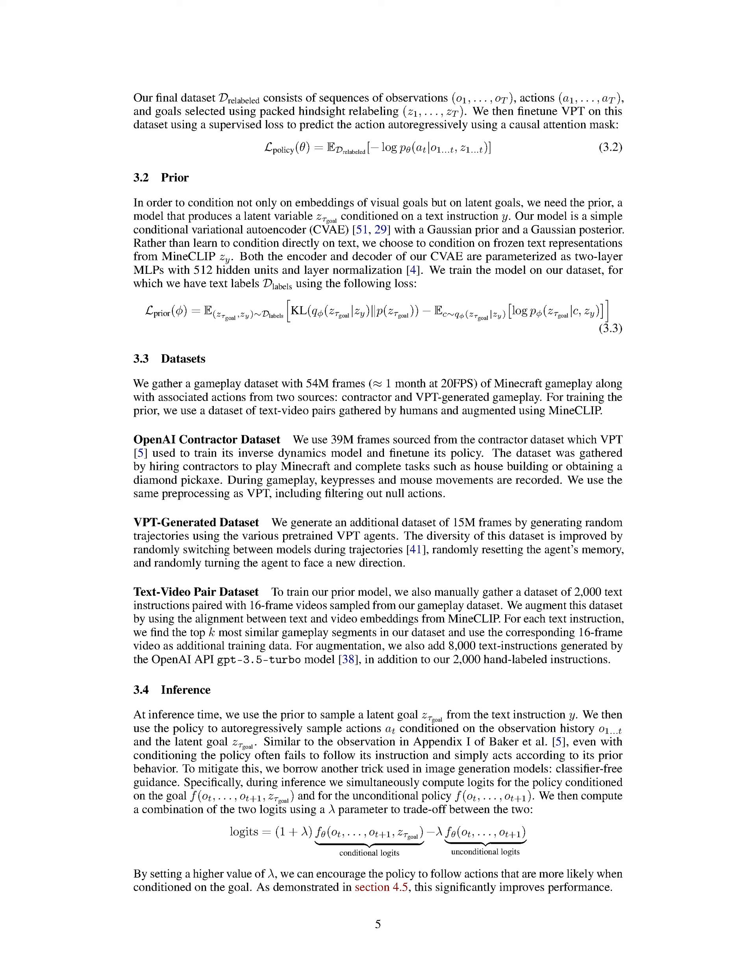We've created a dataset to train our model which includes 2,000 sets of text instructions, each paired with a 16-frame video clip taken from our gameplay dataset. We've enhanced this dataset by aligning text and video embeddings using MineClip. For each text instruction, we identify the top K gameplay segments most similar in our dataset and use the corresponding 16-frame video as additional training data. We've also expanded our dataset by adding 8,000 text instructions generated by the OpenAI API GPT-3.5 Turbo model, on top of our 2,000 manually labeled instructions. During the inference phase, we use our model to generate a latent goal from the text instruction, then use the policy to generate actions based on the observation history and the latent goal.